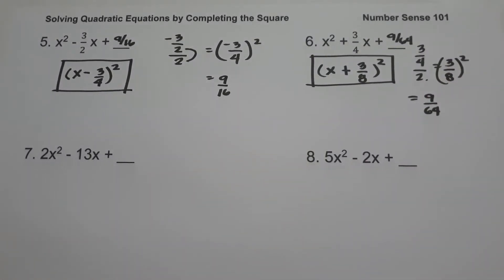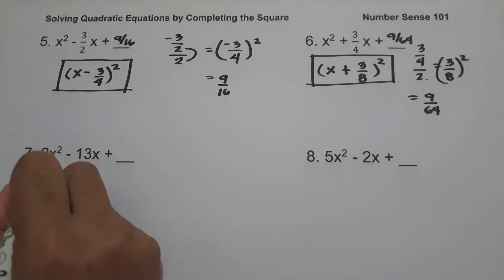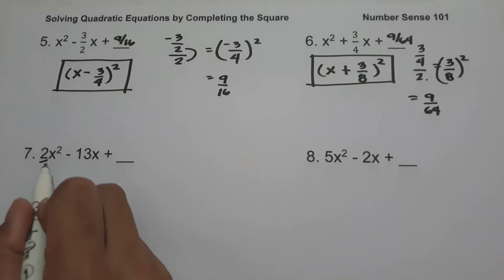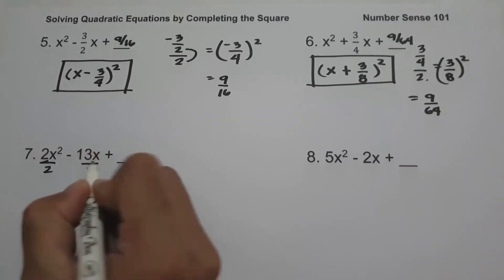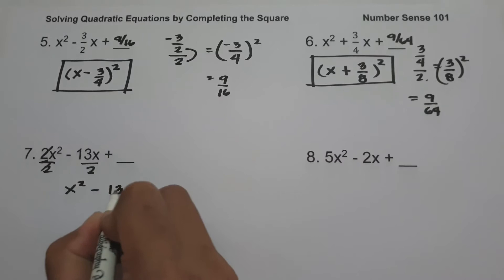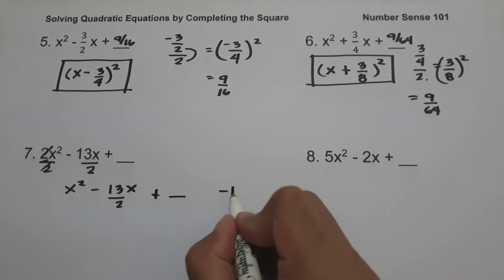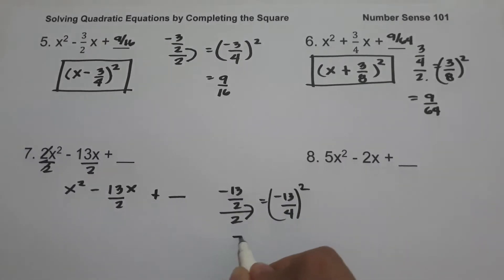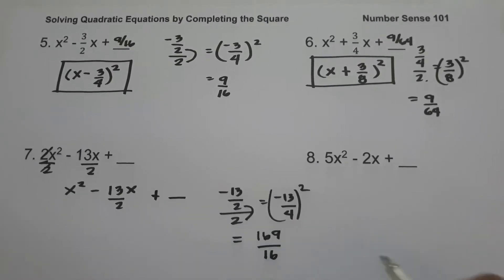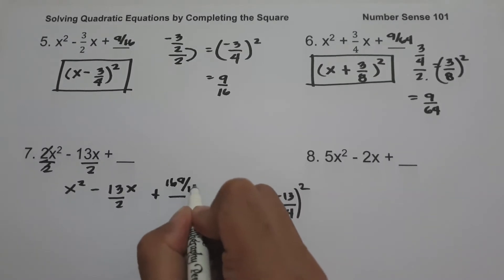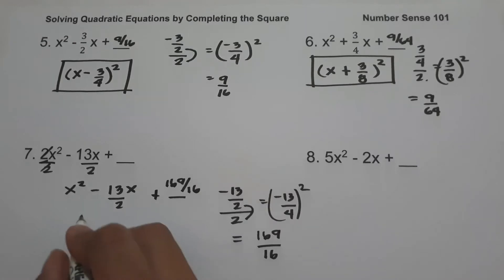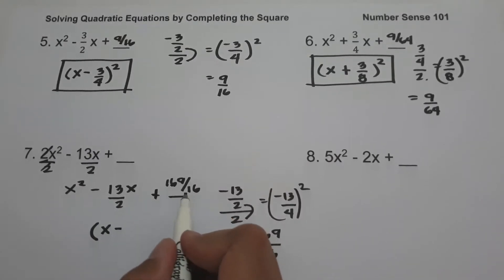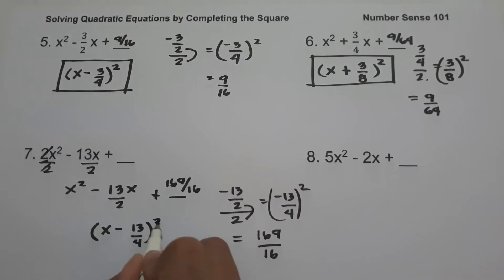On number 7, we have 2x squared minus 13x plus blank. The value of a is greater than 1, and that is 2. To simplify and make this a perfect square trinomial, we need to make the value of a equal to 1. So let us divide the whole equation by 2, giving x squared minus 13x over 2 plus blank. So we have negative 13 over 2 divided by 2, that is negative 13 over 4. Let us square: 13 squared is 169, 4 squared is 16. So we add 169 over 16. To factor: the square root of x squared is x, the sign is negative, the square root of 169 over 16 is 13 over 4, and then square. This will be our answer.